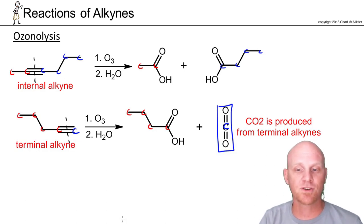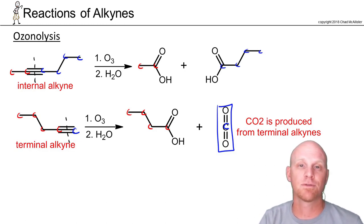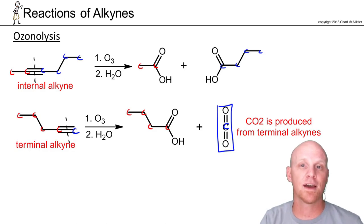So for an internal alkyne: two carboxylic acids. For a terminal alkyne: one carboxylic acid and one molecule of CO2.